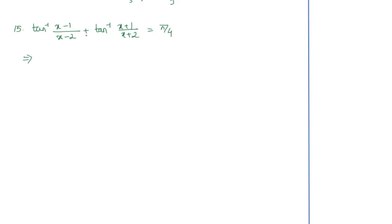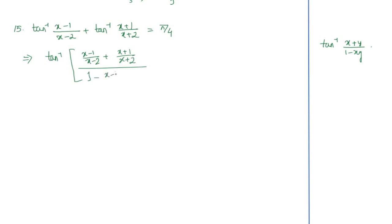Using that formula, this becomes tan⁻¹ of [(first term + second term) / (1 − first term × second term)], which is equal to π/4. So we apply tan⁻¹ of [(x−1)/(x−2) + (x+1)/(x+2)] / [1 − ((x−1)/(x−2))·((x+1)/(x+2))] = π/4.